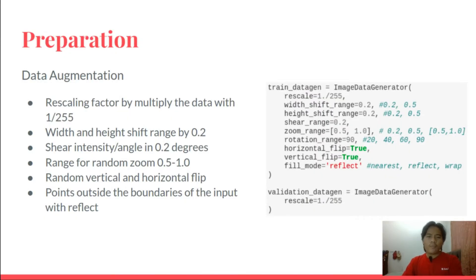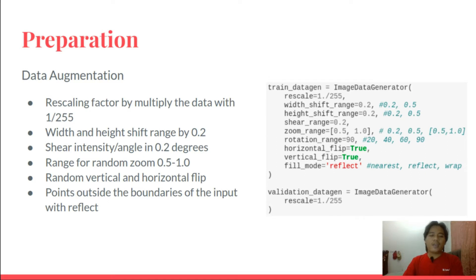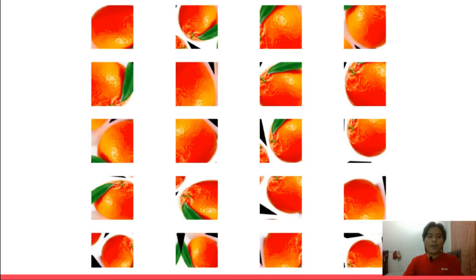For the dataset pre-processing, we augment our dataset to generate more data. In this augmentation, we do a lot of pre-processing such as rescaling images with height shifting, shearing images, zooming images, vertical and horizontal flipping, and reflecting the image. Here is the result of our augmentation.